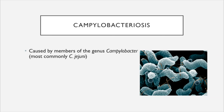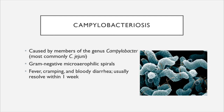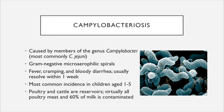Next is Campylobacteriosis, caused by members of the genus Campylobacter, most commonly Campylobacter jejuni. These bacteria are gram-negative, microaerophilic in their oxygen requirements, and spiral-shaped. Associated signs and symptoms include fever, cramping, and bloody diarrhea, typically resolving within one week. The most common incidence is in children aged 1 to 5. Virtually all poultry meat and 60% of milk is contaminated with Campylobacter, making milk pasteurization and thorough cooking of poultry particularly important.